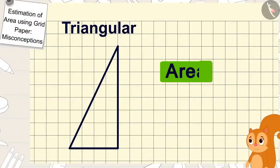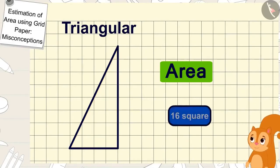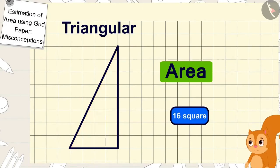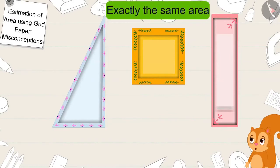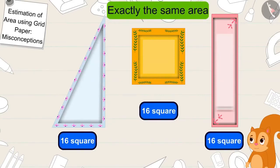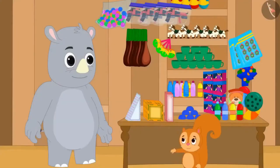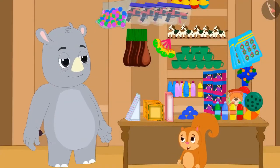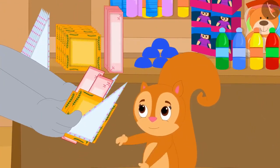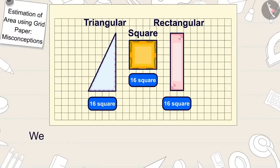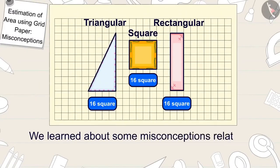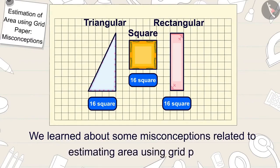Chanda found the area of the triangle shaped plate just like you. Hey Gaggoo, there are sixteen squares in the area of this triangle shaped plate too! The shapes of these plates may be different, but their areas are exactly the same. The plates of these three shapes are very beautiful — give me plates of all three shapes, said Chanda, and bought plates of all three shapes. In this video, we learned about some misconceptions related to estimating area using grid paper.